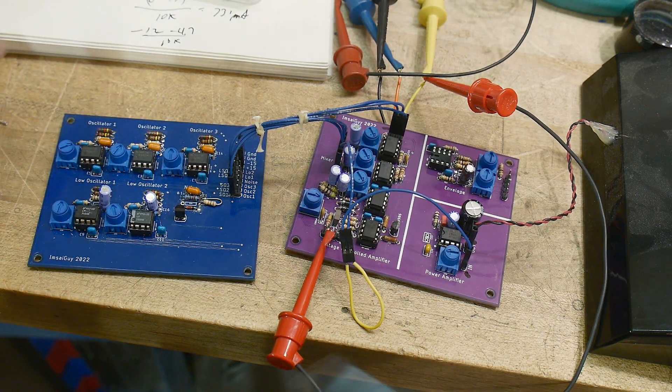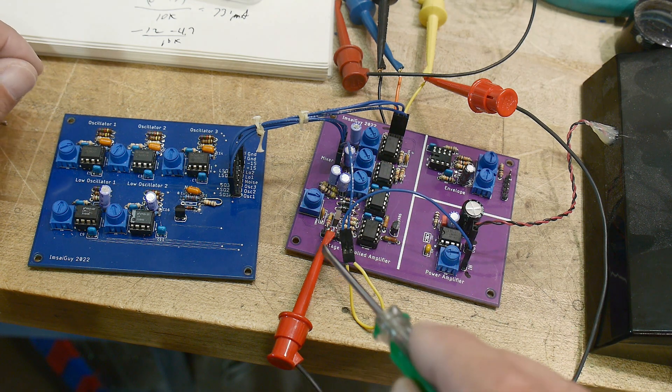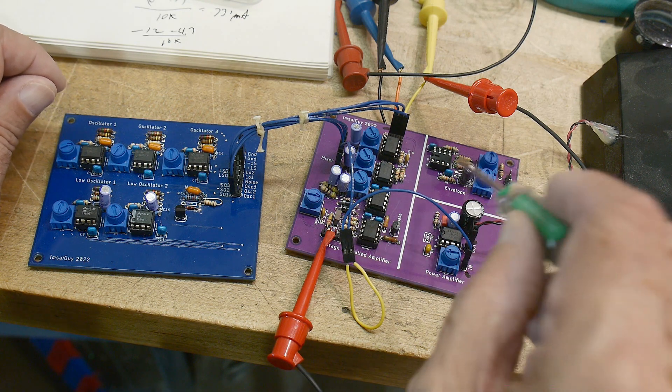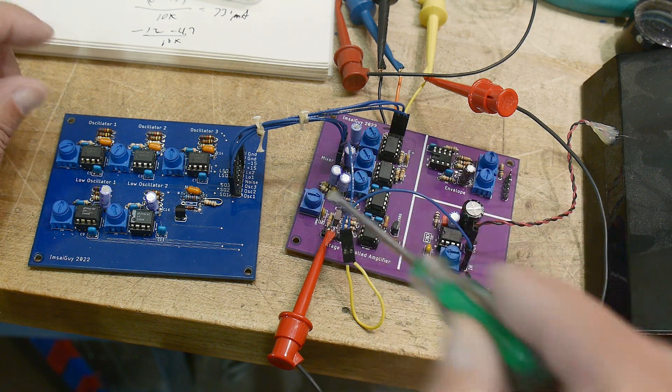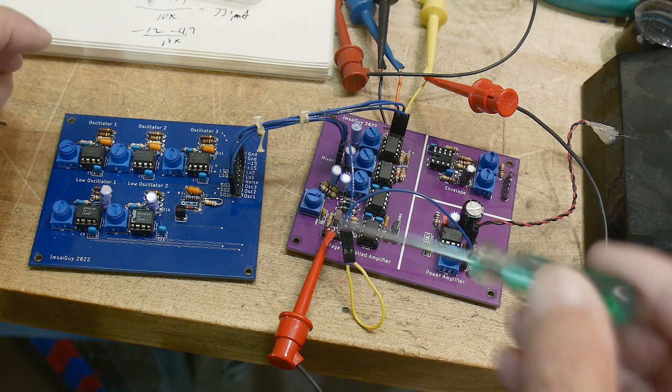So I have this board loaded for the most part. I'm having problems with the voltage-controlled amplifier right now, so I just have it jumpered out and I'm not going to be using the envelope generator which would be modulating the voltage-controlled amplifier. But I do have the power amplifier running, the mixer running, and the oscillators running.